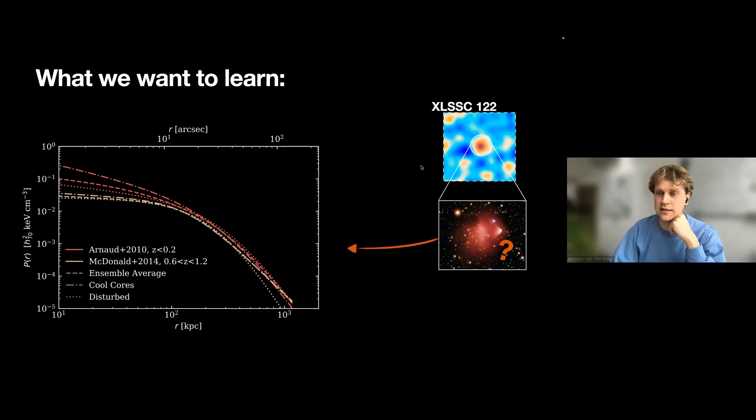What we want to see, for instance, is how XLSSC, the cluster I'm going to look at at redshift 2, falls on top of this diagram.